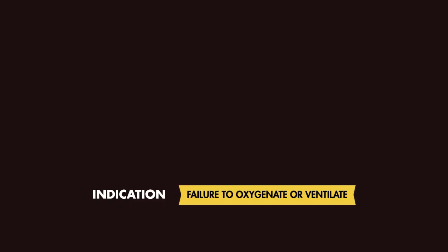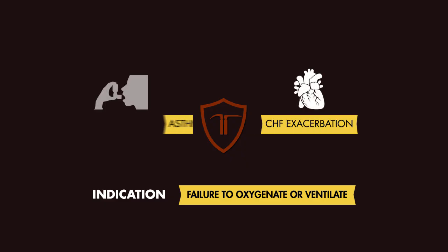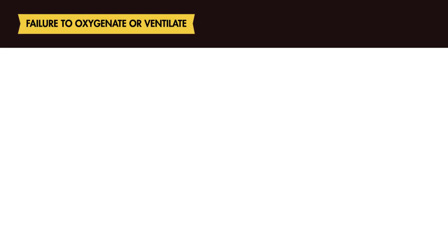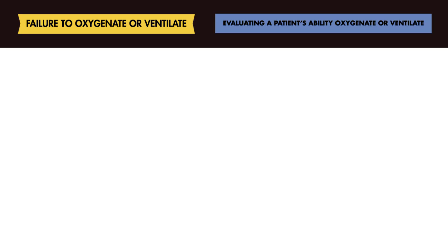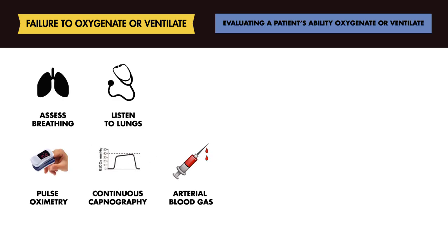Another indication for RSI is a patient who fails to ventilate or oxygenate — for example, those in a CHF exacerbation, or a COPD or asthma exacerbation. In the emergent setting, evaluating a patient's ability to ventilate or oxygenate is made on clinical grounds. Look at the patient. Is their breathing labored, and is there a concern that they will tire out from their breathing? Adjuncts to your exam can also help determine a patient's ability to ventilate and oxygenate — things like a pulse oximeter, continuous capnography, blood gases, etc.